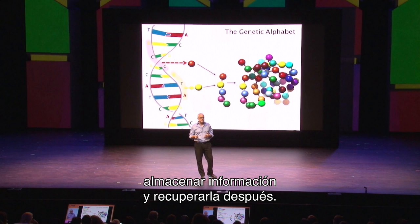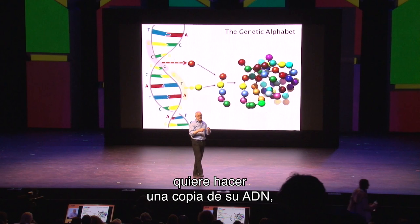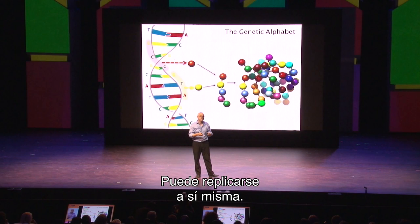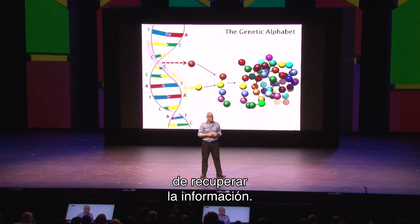The way that works is that the cell, when it wants to divide, when it wants to make a copy of its DNA, it just splits the strands and then copies that one strand. Every time it finds a G, it makes in the new strand a C. Every time it finds a T, it puts in the new strand an A, so it can copy itself. That base pairing also underlies the retrieval of that information.